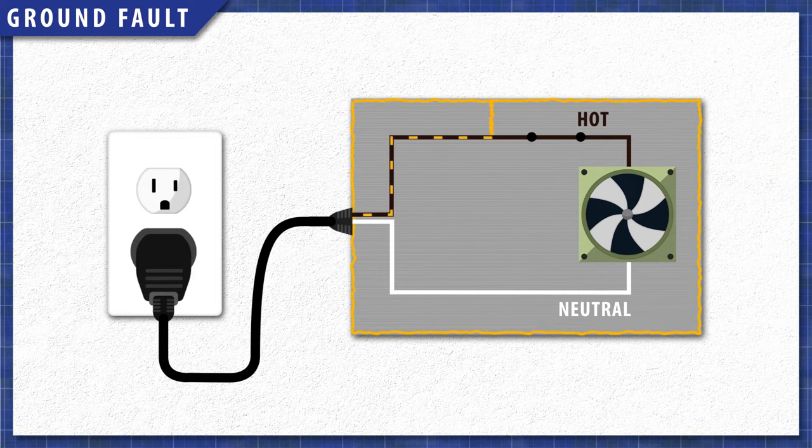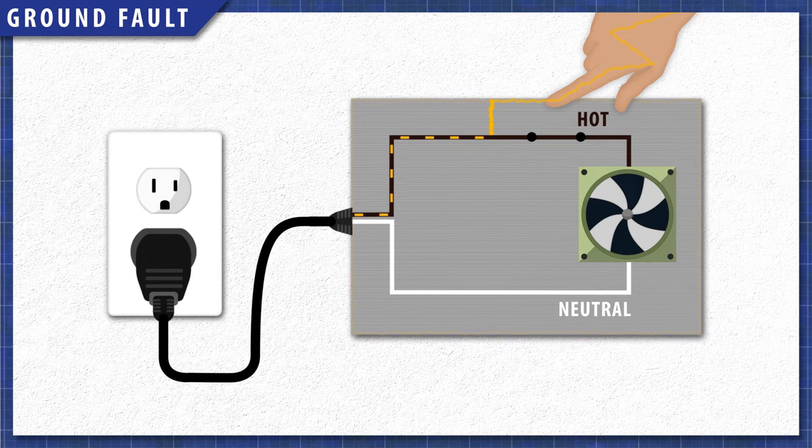Electricity will always take the path of least resistance. If you touch an energized housing that doesn't have a ground wire, you might be electrocuted.